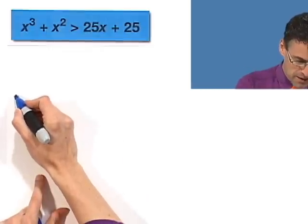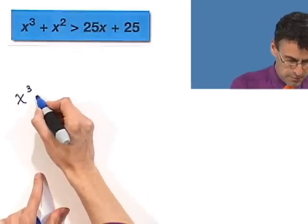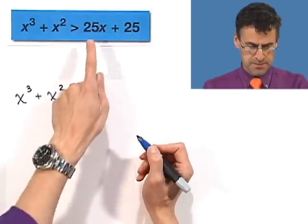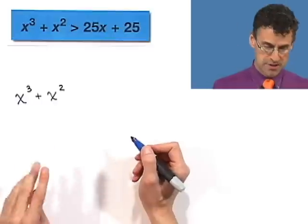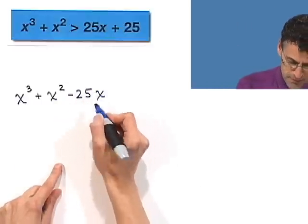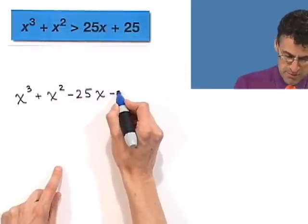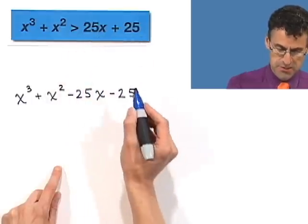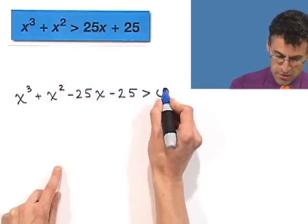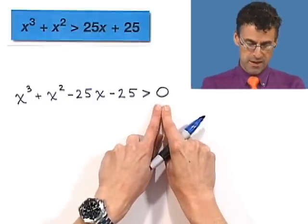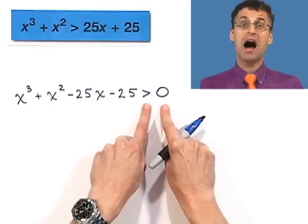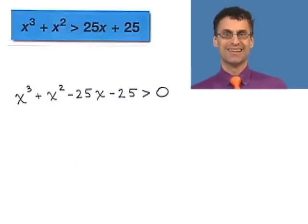So I'll bring everything over to the left-hand side: x cubed plus x squared, then subtract 25x from both sides — the inequality doesn't change — giving minus 25x, and subtract 25 from both sides giving minus 25. So now we have x cubed plus x squared minus 25x minus 25 greater than zero. Notice there's the magic zero — this whole expression has to be positive. The only way factors multiply to something positive is if they're all positive or there's an even number of negatives.